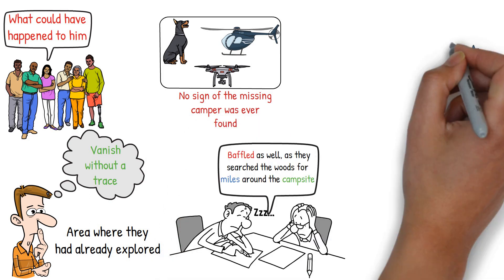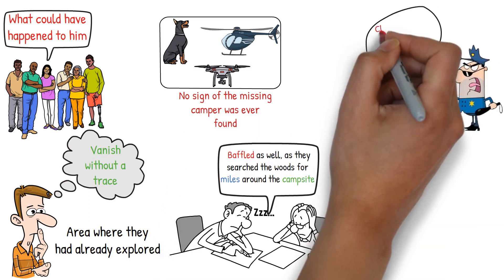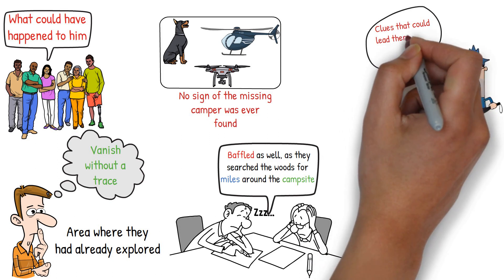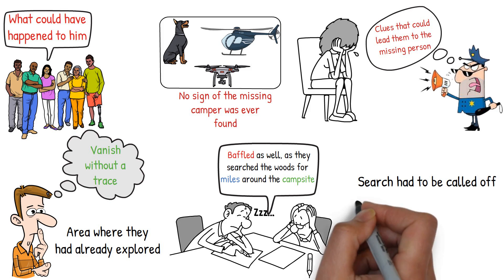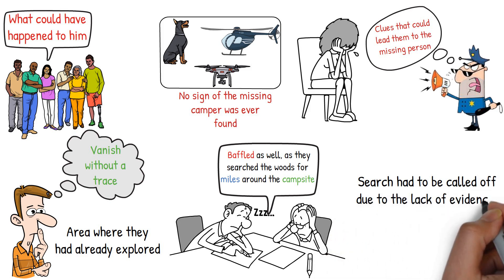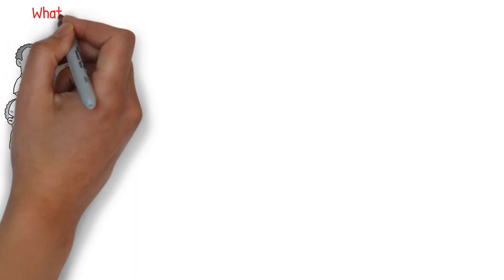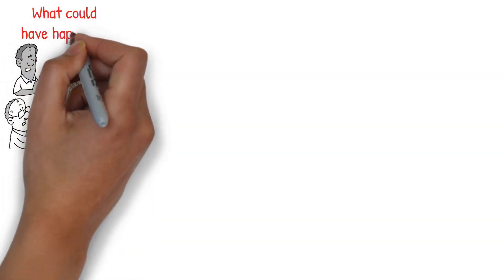The authorities expanded their search, covering more ground and looking for any clues that could lead them to the missing person, but nothing was found. Eventually, the search had to be called off due to the lack of evidence or leads. The missing camper's friends and family were left with no answers, only speculation about what could have happened.